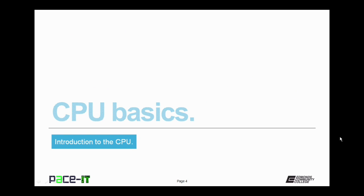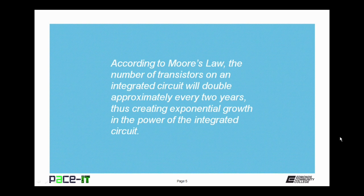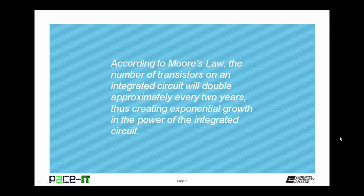So let's begin with some of the basics of the CPU. According to Moore's law, the number of transistors on an integrated circuit will double approximately every two years. This creates an exponential growth in the power of the integrated circuit. Now Moore's law was introduced back in the 60s, and it still pretty much holds true for today's CPUs.